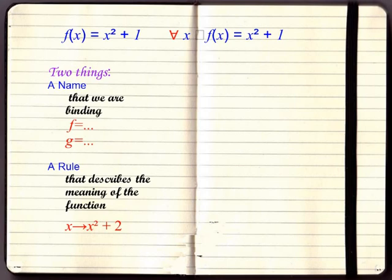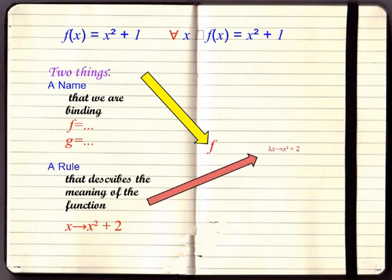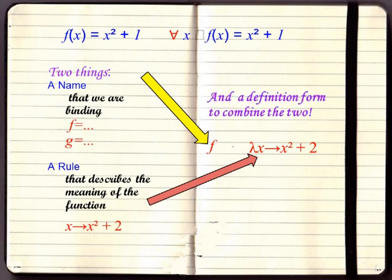What are these hidden aspects? A name like f or g or h that is bound to a rule, and a rule that is the functionality of the function. Its functionness comes from this rule. And with a new definition syntax we need to combine these two sides into one, to bind the name to a rule. That is a definition.